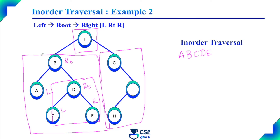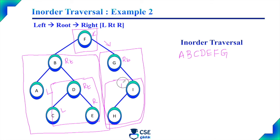Now this left subtree is completely over. Move to the root node and print F. Now move to the right subtree and solve it as per inorder traversal. Root node is G; there is no left child, only a right subtree. So inorder: no left node, then G (root), then the right subtree. In that right subtree, I is the root node and H is the left child, so left child H then root node I. This is the inorder traversal output for this given binary tree.